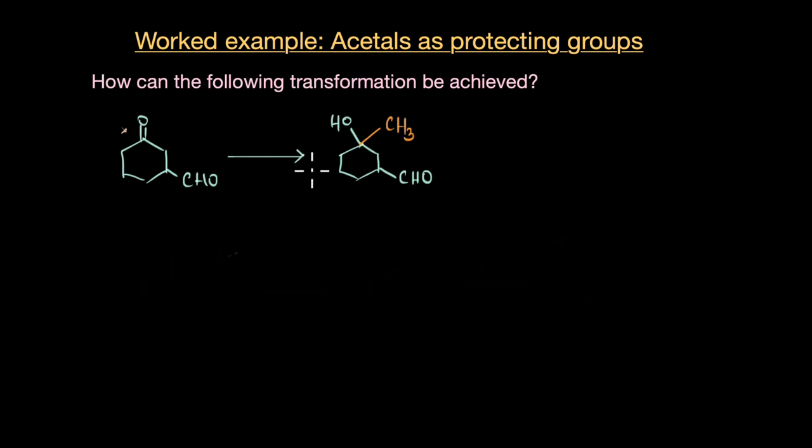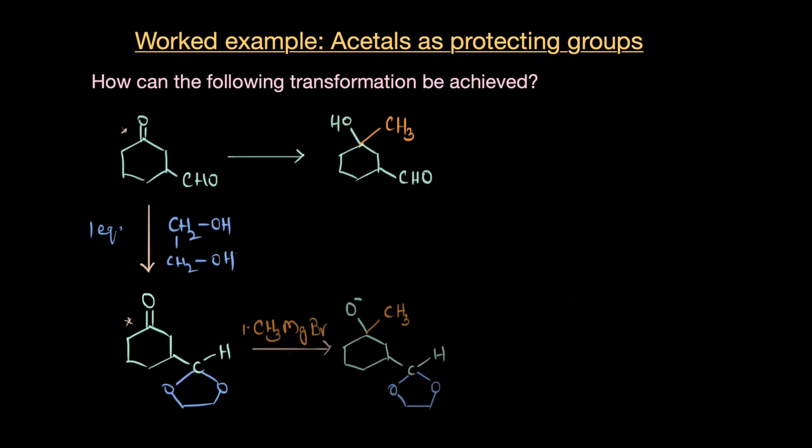So, the first thing obviously is to protect our aldehyde group. And for that, we have to use the acetal. We will use the typical one equivalent of ethylene glycol and block the aldehyde group here. And now, let the reaction happen selectively at this site. So, you can see that CH3 minus attacks the carbonyl group. So, looks like it should be a Grignard reaction where our nucleophile is CH3 minus. So, this CH3 minus ion attacks the C double bond O group here.